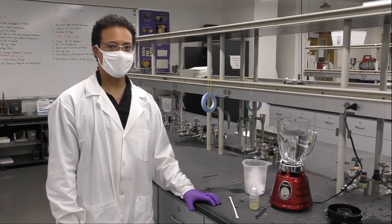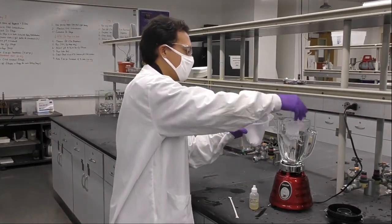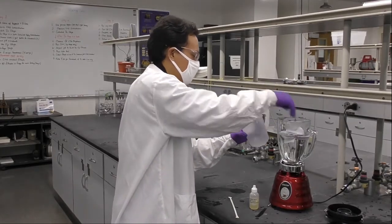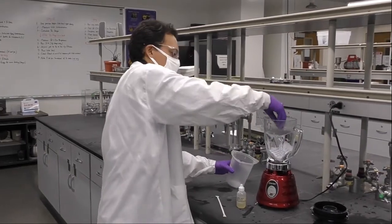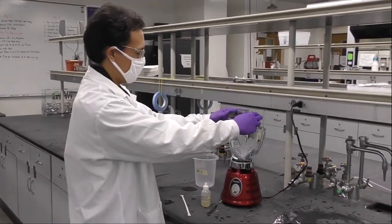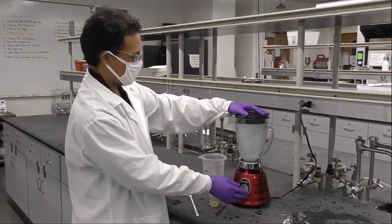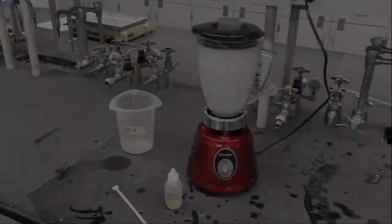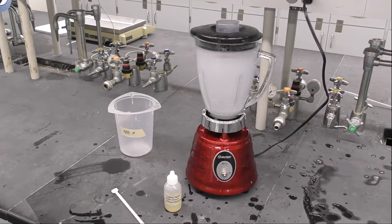Now we need to put our torn paper into the warm water. Make sure that you remove your fingers first and then you can cover the blender and you will stir the paper with the water for 45 seconds. Once again, we are blending the recycled paper with the water for 45 seconds.